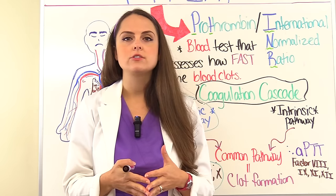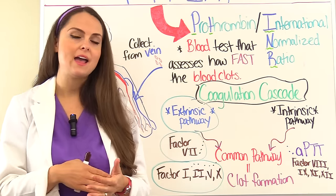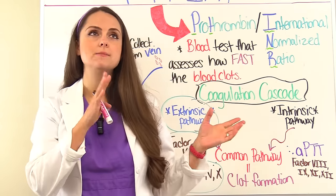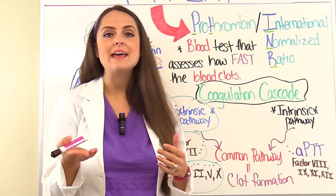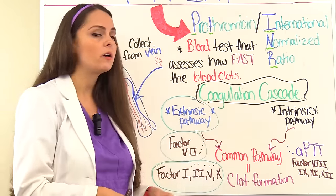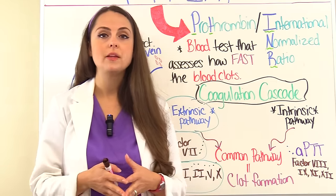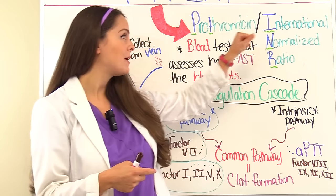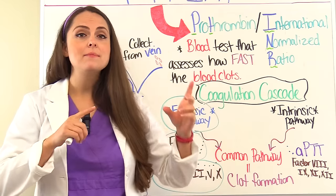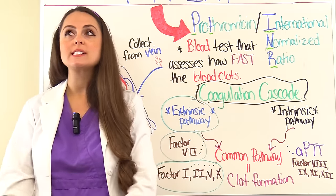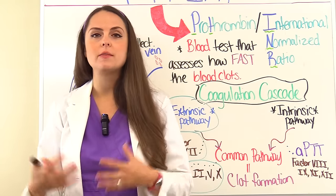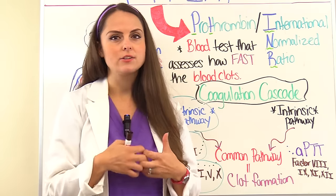Prothrombin, along with other clotting factors, are really dependent on vitamin K, which is produced in the liver. If a patient's PT INR level is out of range, it could indicate they have some type of liver issues going on, because their body's not making vitamin K like it should, and they can't get these clotting factors on board to help with clot formation. Also, warfarin is called a vitamin K antagonist — it works against vitamin K — because the whole goal of warfarin is to prolong how long it takes a clot to form in the body.